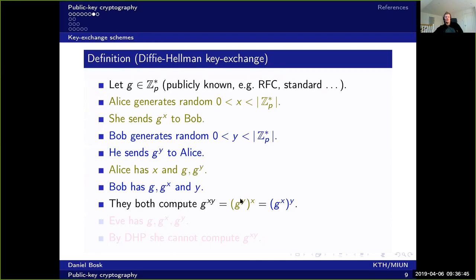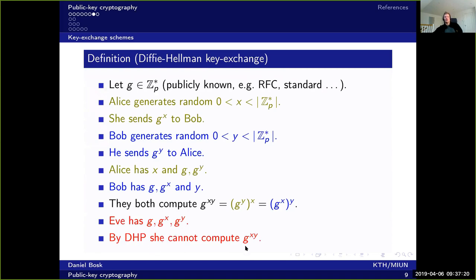Alice takes G^Y that she got from Bob and raises it to the power of X because she knows X. Bob takes G^X that he got from Alice and raises it to the power of Y because he knows Y. Eve only has G, G^X, and G^Y - exactly the input of the Diffie-Hellman problem - and we assumed it's hard for Eve to compute G^XY. This means Alice and Bob can agree on a secret and use G^XY as a key for a shared key cryptosystem, agreeing on a key without ever having met before.